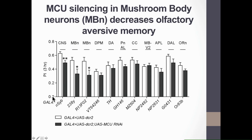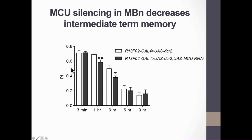What we observed was that silencing MCU specifically in mushroom body neurons caused a three-hour memory decrease, as also observed when MCU was silenced in the whole central nervous system, mapping MCU function to mushroom body neurons. We then asked in which specific memory phase MCU was required by training the flies and testing their memory at different time points. While immediate memory was not changed by MCU silencing, there was a significant decrease in one- and three-hour memory, mapping MCU function to intermediate-term memory phases.